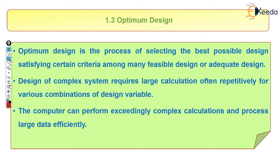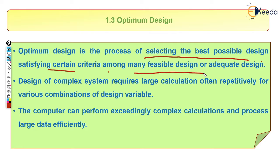Technically, optimum design is the process of selecting the best possible design which satisfies the criteria among many feasible designs or feasible solutions. For example, if a product has 10 design variants, out of those 10 designs we select only one — the best one — which fulfills all our requirements.